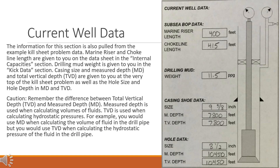Current well data. The information for this section is also pulled from the example kill sheet problem data. Marine riser and choke line length are given to you on the data sheet in the internal capacities section. Drilling mud weight is given to you in the kick data section. Casing size, measured depth (MD), and total vertical depth (TVD) are given to you at the very top of the kill sheet problem, as well as the hole size and hole depth in MD and TVD.